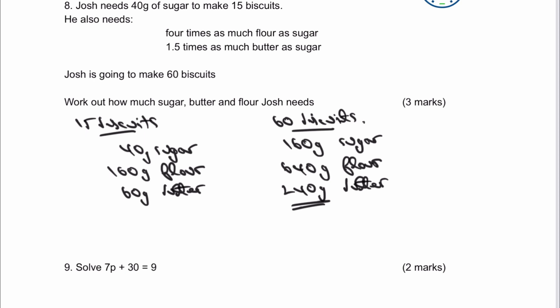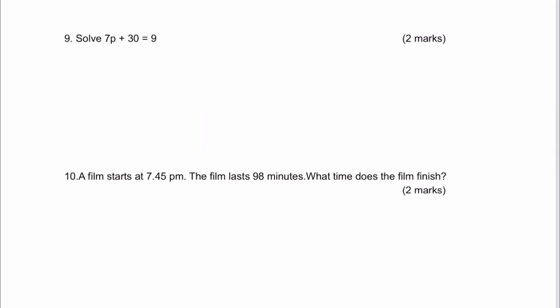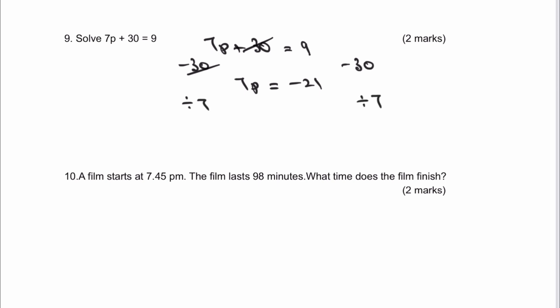Let's move on to the final two questions. For the algebra question, starting with 7p + 30 = 9: subtract 30 from both sides to get 7p = −21, then divide by 7 to get p = −3.